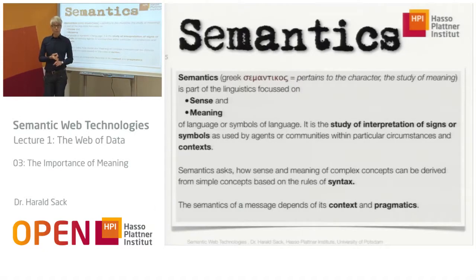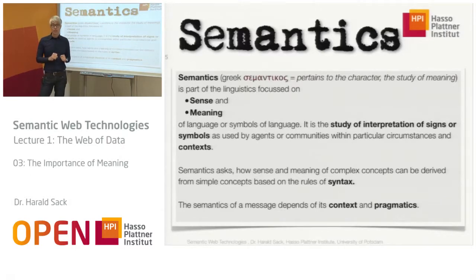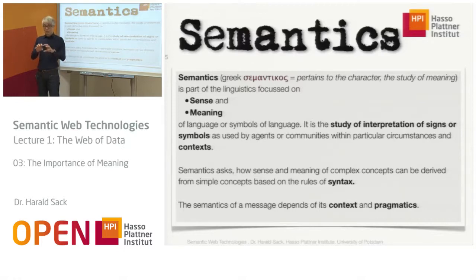The word comes from Greek — semanticos — meaning it pertains to the character or the study of meaning. Semantics itself is part of linguistics and is focused on sense and meaning of language or symbols of the language. It is the study of interpretation of signs and symbols from a language as used by agents or communities within particular circumstances and contexts. Semantics asks, for example, how can I make sense of complex concepts and how can they be derived from simpler context based on rules that are fixed on syntax?